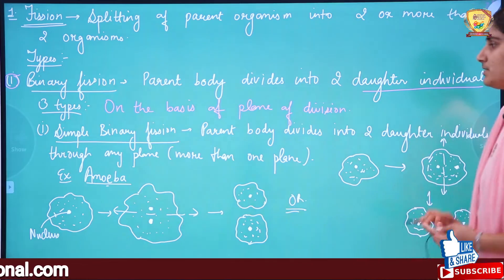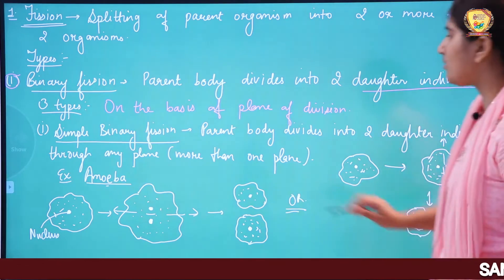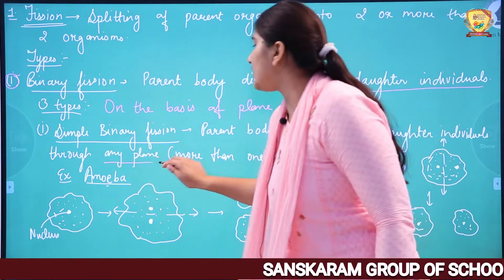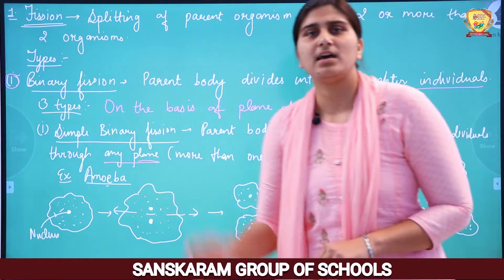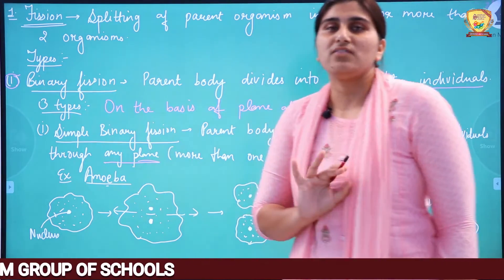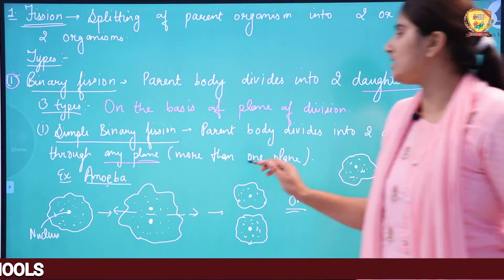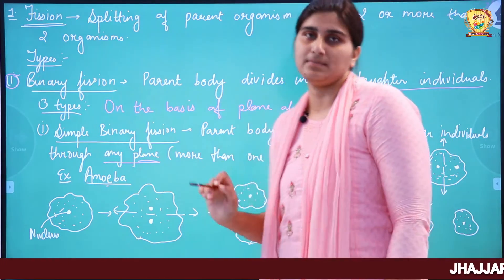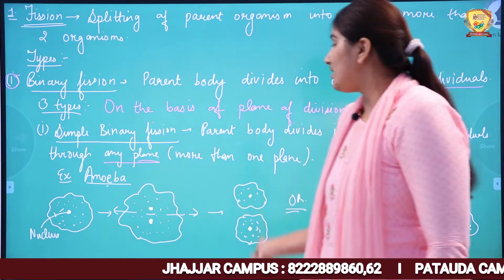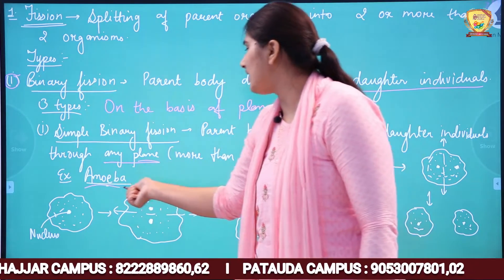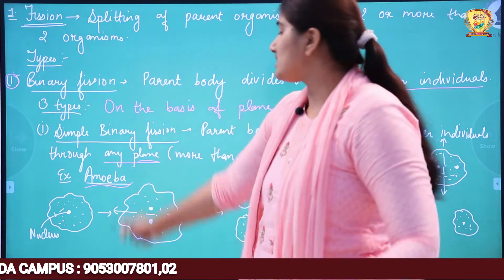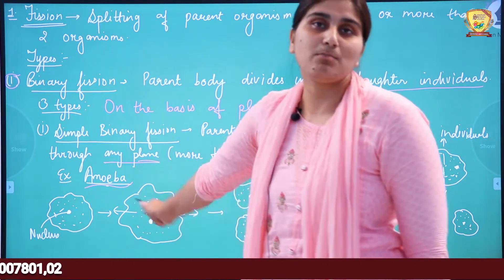In Simple Binary Fission, the parent body divides into two daughter individuals through any plane — diagonal, longitudinal, or transverse. There is no fixed plane of division; it can divide through any plane. The example is Amoeba — this is the classic example of Simple Binary Fission.